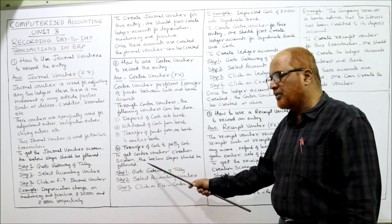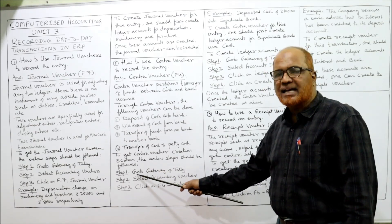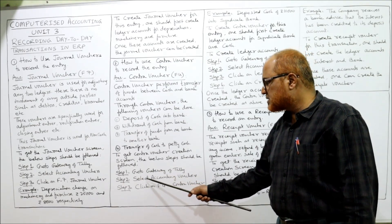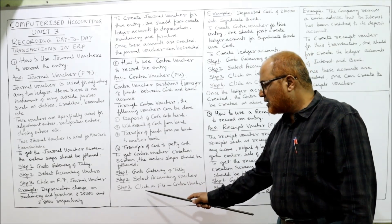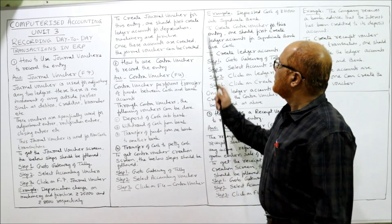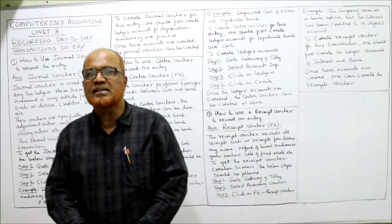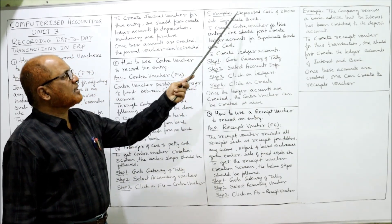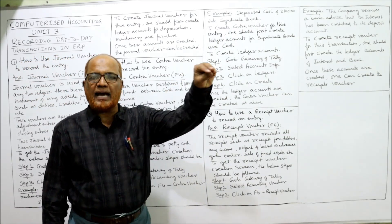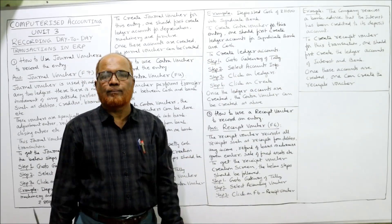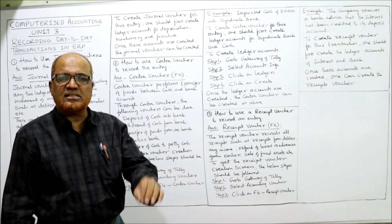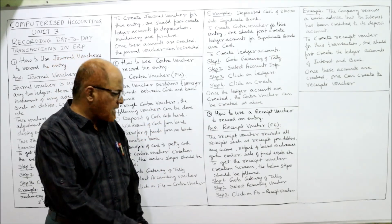To get the contra voucher creation screen, follow these three steps: Step one: go to Gateway of Tally. Step two: select Accounting Vouchers. Step three: click on F4 for contra voucher. Example: deposited cash 10,000 rupees into Syndicate Bank. This deposit of cash into Syndicate Bank will be passed in contra voucher, that is F4.